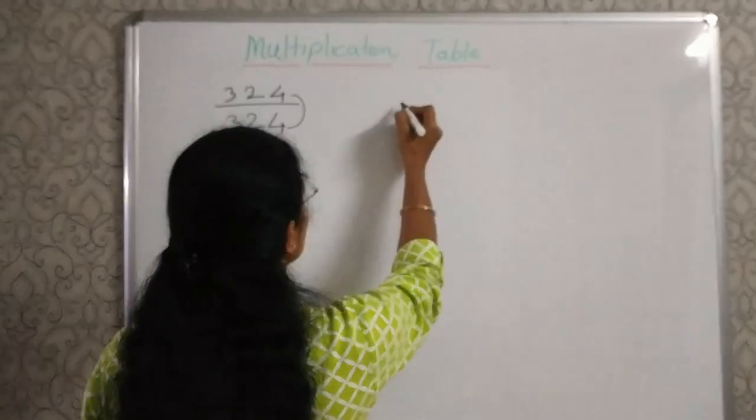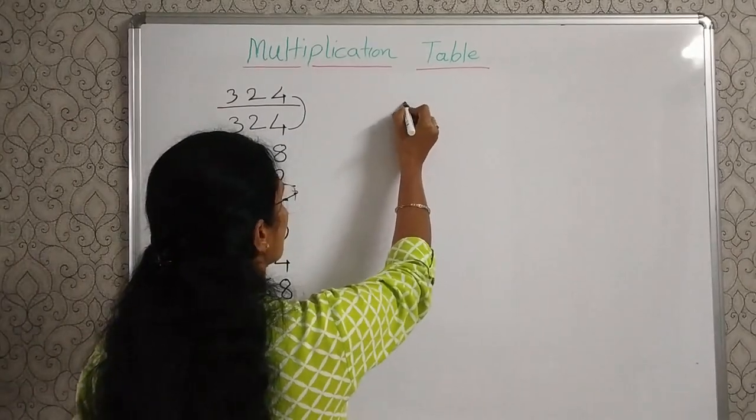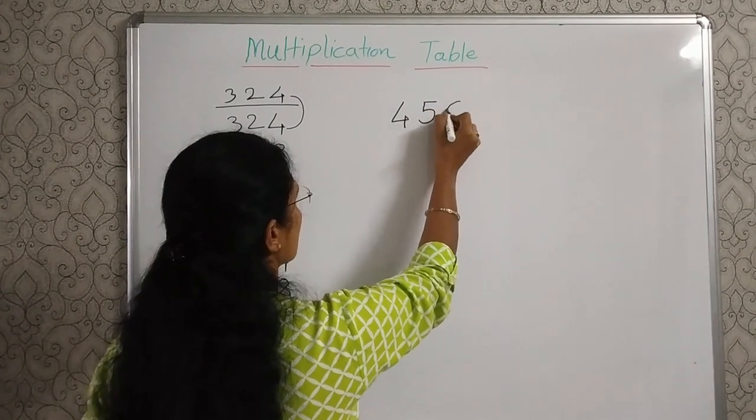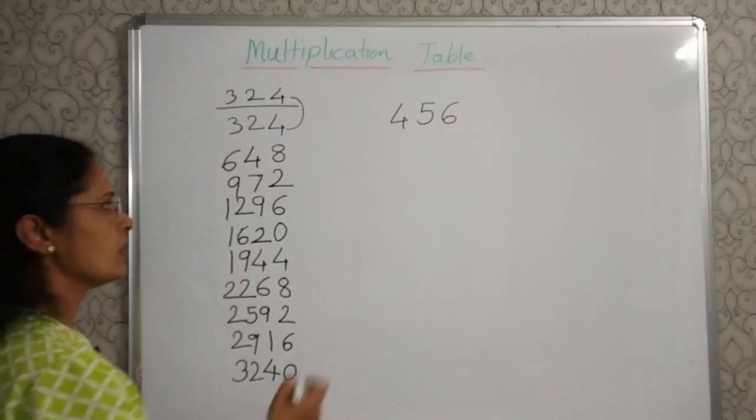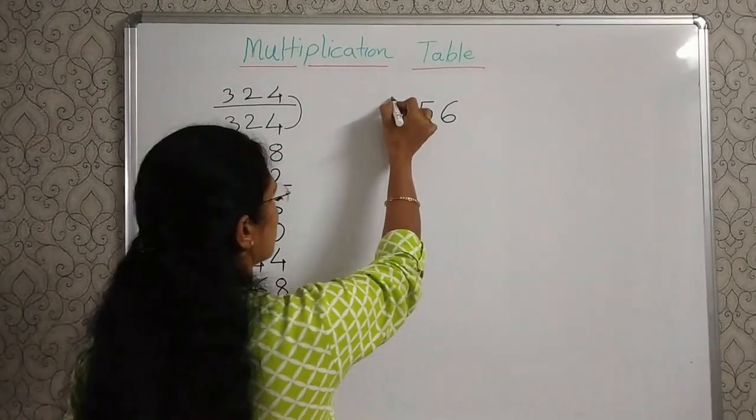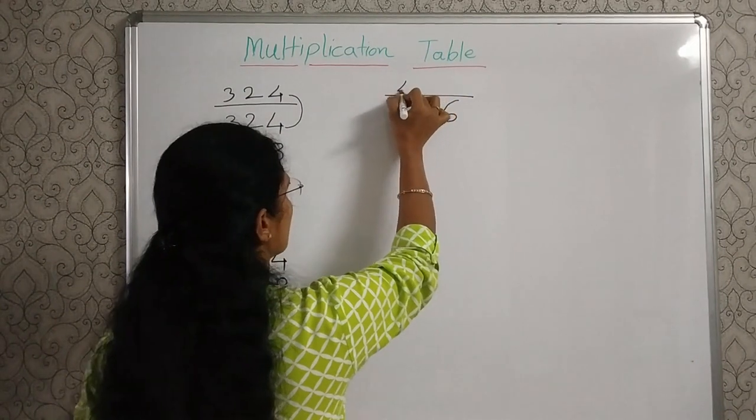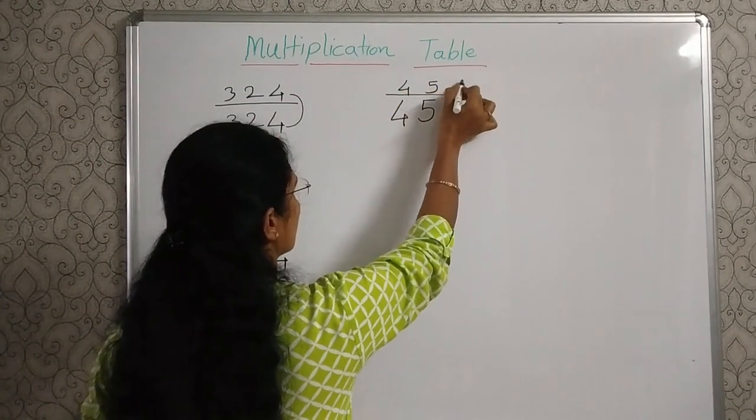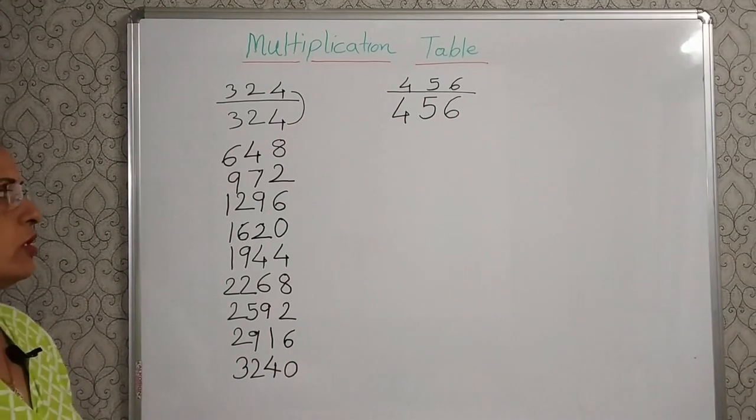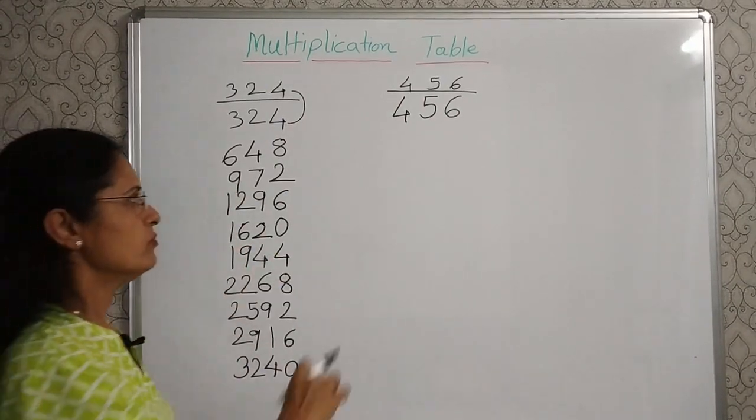Say 456. To form a table of this three-digit number, we will write the same 456 on the top. And now start adding from top.